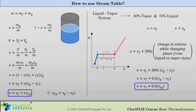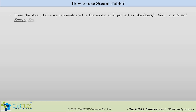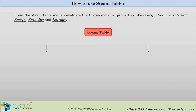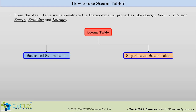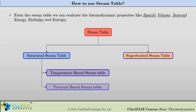From the steam table we can evaluate thermodynamic properties like specific volume, internal energy, enthalpy, and entropy. Steam tables can be of two types: first, saturated steam table, and second, superheated steam table. In saturated steam tables, there are two subtypes: temperature-based and pressure-based. Let us see individually how to interpret data from each.